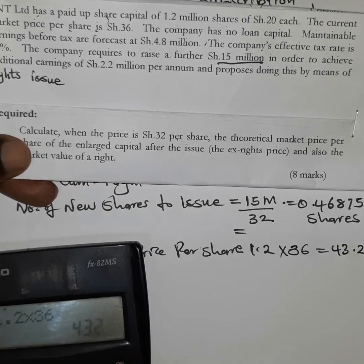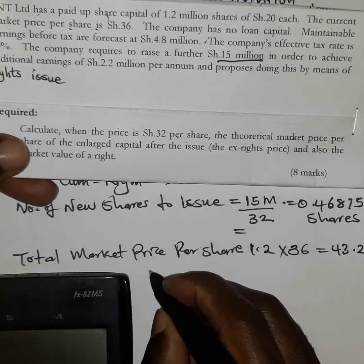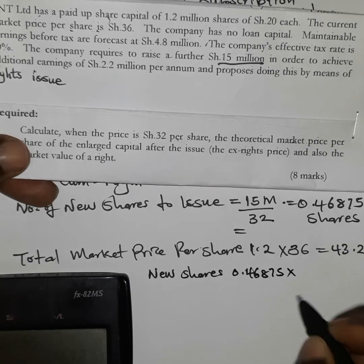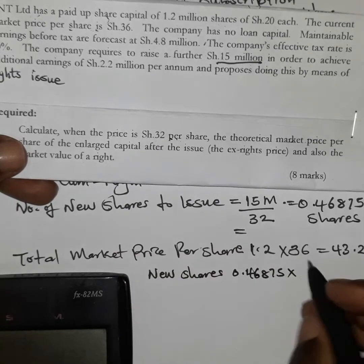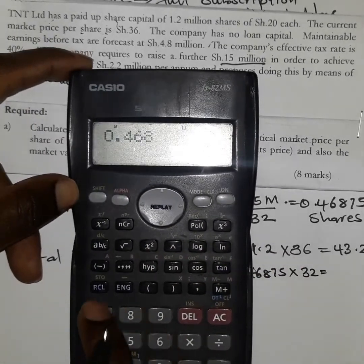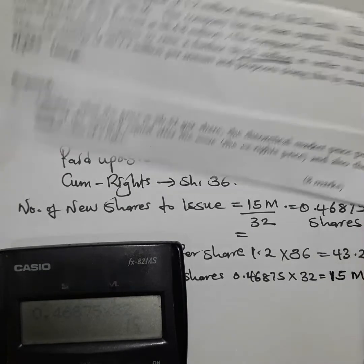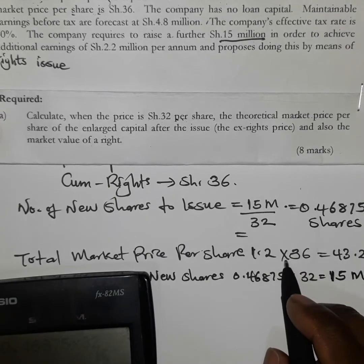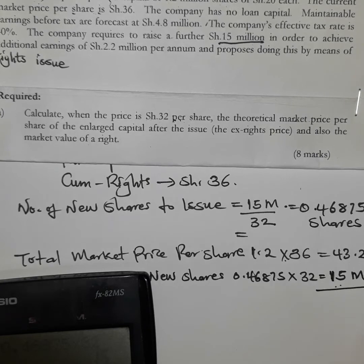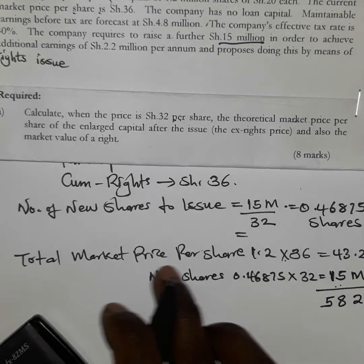Then we have the value of the new shares. The new shares = 0.46875 million × 32 shillings = 15 million. So the total market price of all shares = existing shares value of 43.2 million + new shares value of 15 million = 58.2 million. This is the total market price of the shares trading in the market.